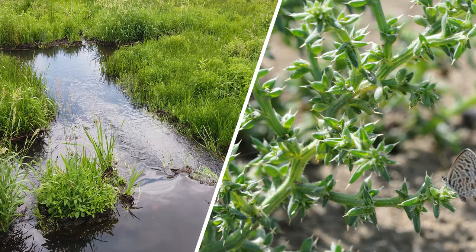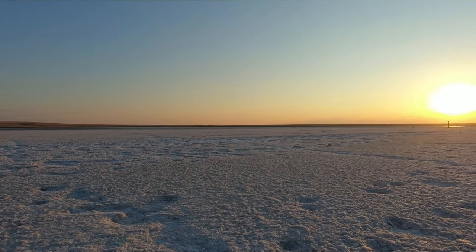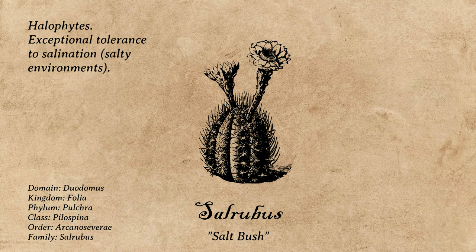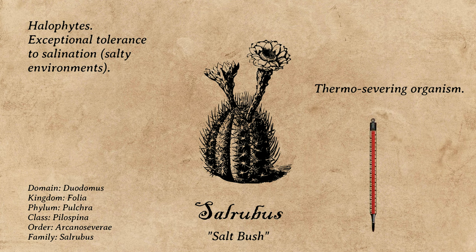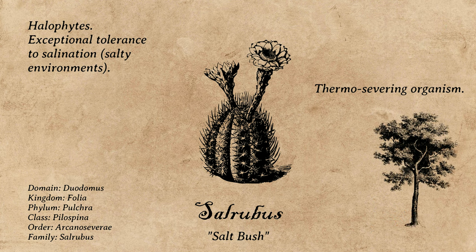A variety of halophytes exist on Earth, such as salt marsh grass and salt warts. Selrubis exist across the salt pans found in deserts, and use a fictional process called severance to consume energy from its environment — specifically utilizing thermoseverance, which drastically reduces the temperature of the nearby area. Here's a link to the video explaining how this process works.